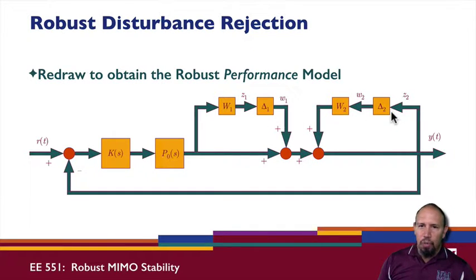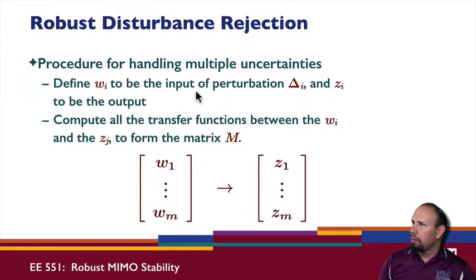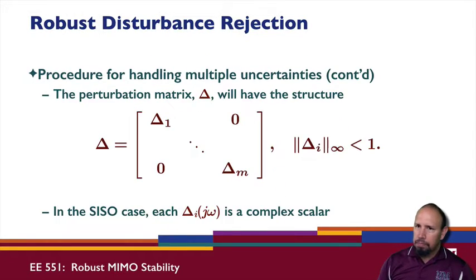We can treat the disturbance rejection problem like an uncertainty problem. If you have multiple uncertainties, you define a disturbance input associated with each perturbation and an output associated with each. We compute the transfer functions between each of the w_i and z_i to form the matrix M. In the single input single output case, each of these is going to be a scalar.